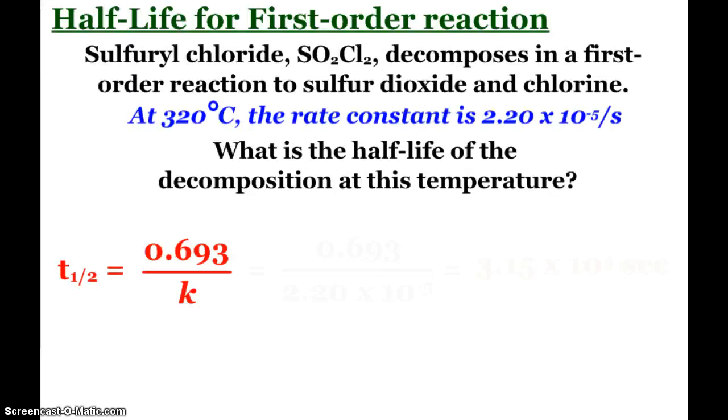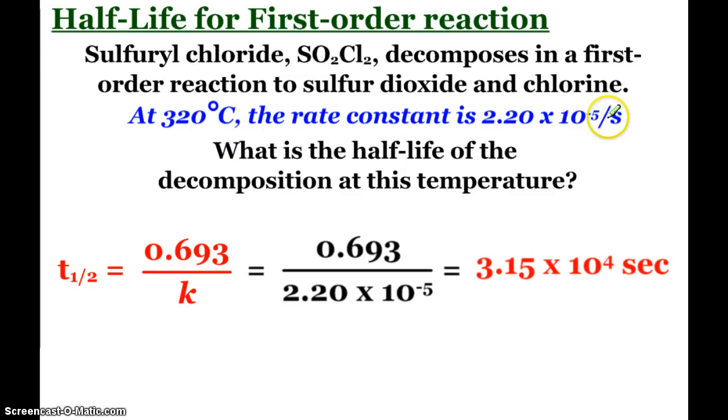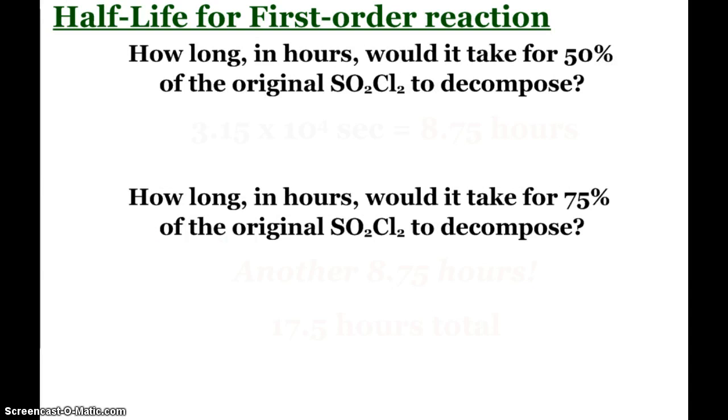So here's an example. Sulfurochloride decomposes in a first-order reaction at this temperature, that's the rate constant because of course our constant is temperature-dependent. What is the half-life? And we simply plug and chug, 0.693 divided by the constant. Since my constant is in inverse seconds, my half-life is going to come out in seconds. Piggybacking on that, how long in hours will it take for half of the original sulfurochloride to decompose? Well, half is the half-life and we just found that out, so all we have to do is convert those seconds into hours, divide by 3,600.